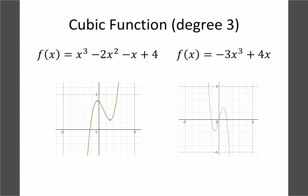Our new one now is a cubic function, which is sort of a combination between linears and quadratics. We have degree three, a positive out front, and a y-intercept of four. Because it's degree three, we get a shape that starts going up but then we get an S-turn — a change in direction.